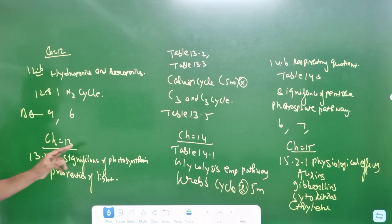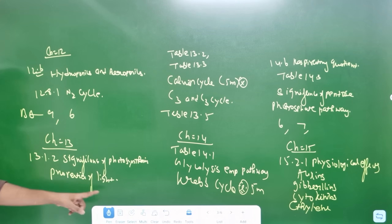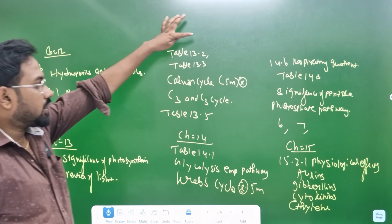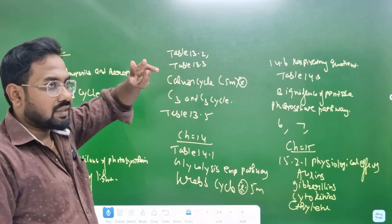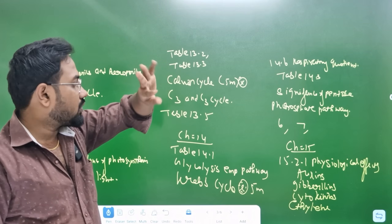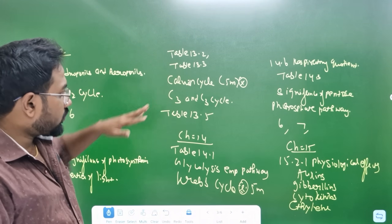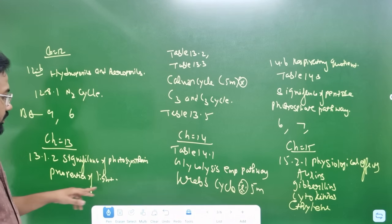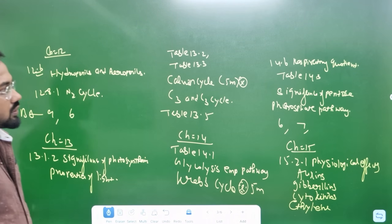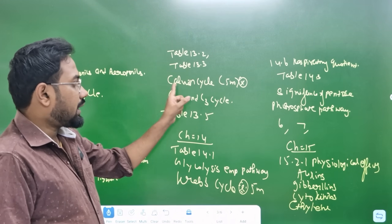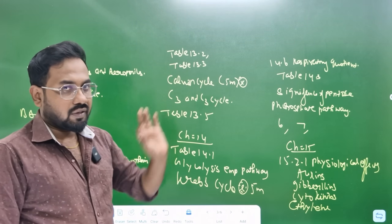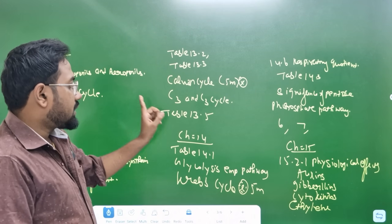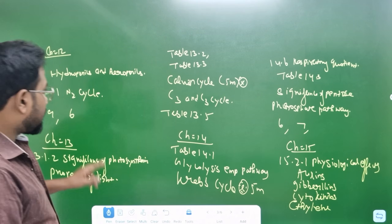Chapter 13 — significance of photosynthesis. Properties of light — section 13.1.2. Table number 13.2. Table number 13.3.3 — C3, C4. Cyclic and non-cyclic — 5 marks, the difference. Difference in the lesson, very important — sections 1, 2, 3. Significance of photosynthesis — sections 1, 2, 3, 4 — 5 marks. Table number 13.5 in the lesson.